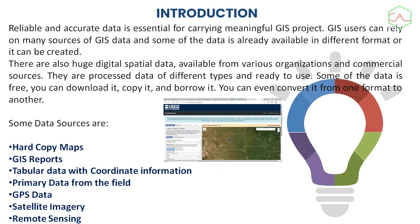As an introduction, there is nothing you can do without acquiring your data or bringing your data in. Data are the raw materials we use to produce whatever you want in a GIS environment. Reliable and accurate data is essential for carrying out meaningful GIS projects. GIS users can rely on many sources of GIS data — some are readily available in different formats and can also be created. Digital spatial data is also available from various organizations and commercial sources, and can be processed into different types ready for use.